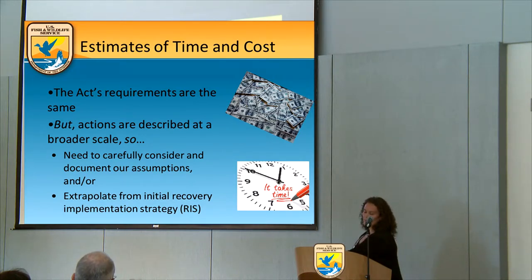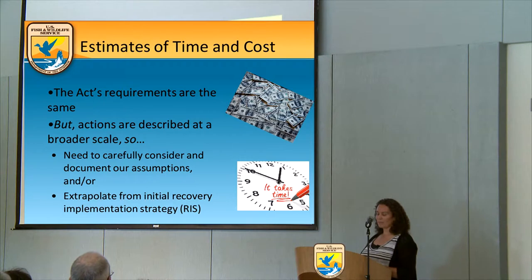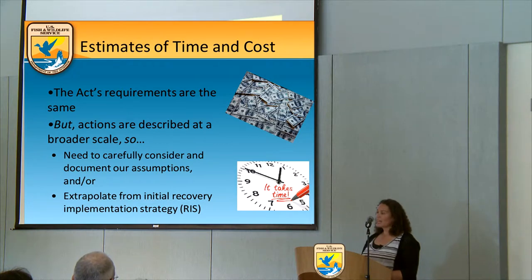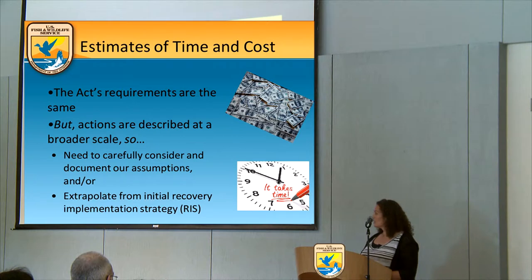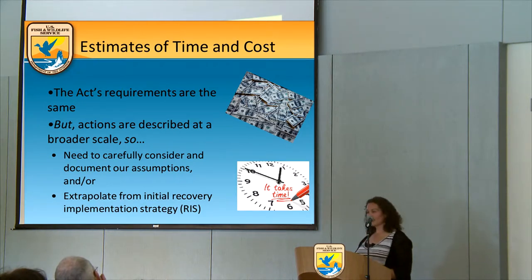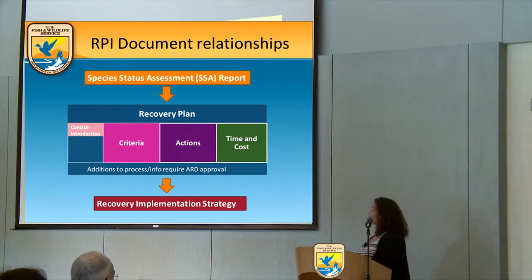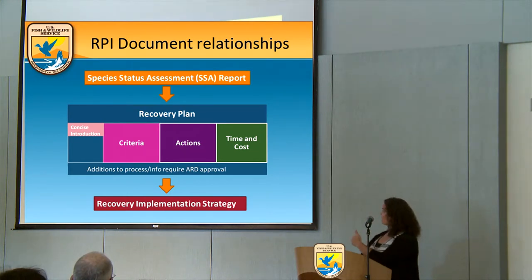The third statutory requirement of the recovery plan is the estimates of time and cost to recovery. These are the same statutory requirements — we're not changing that at all. The Act requires that we provide that estimate; it's important for transparency with our partners and the public and for evaluating our effectiveness. Cost is done in current dollars; we don't try to account for inflation into the future.